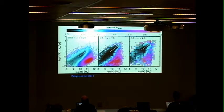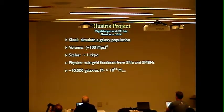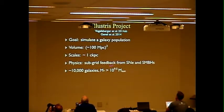We're going to try and do the same thing as a first step in the simulations. A quick rundown of the Illustris simulation: the goal was to simulate a galaxy population in a volume of 100 megaparsecs on a side, resolved on scales of approximately one co-moving kiloparsec, using a physics prescription based on a pressurized ISM model with subgrid feedback — phenomenological subgrid feedback from supernovae and supermassive black holes.